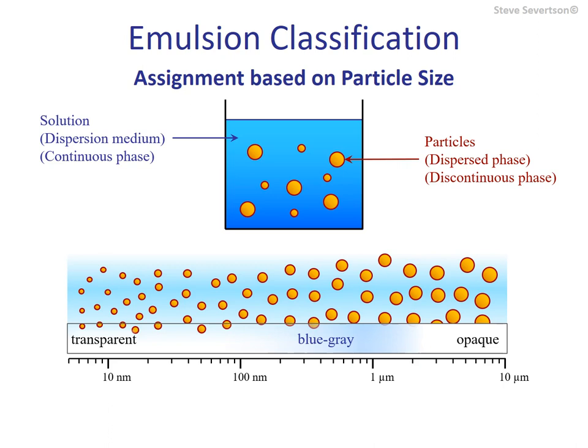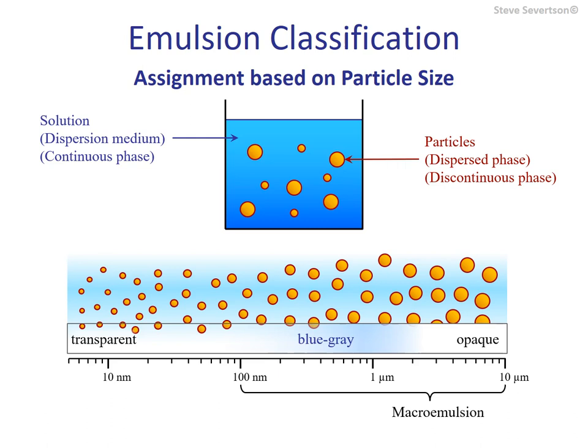One approach for categorizing emulsions is based on particle size. Macro emulsions have the largest particles, ranging in radius from 100 nanometers up to 10 microns and larger, which provides for their white, opaque, milk-like appearance. Macro emulsions are kinetically stable colloids, and they're typically what we think of when discussing emulsions, which is why they're sometimes referred to as ordinary emulsions.